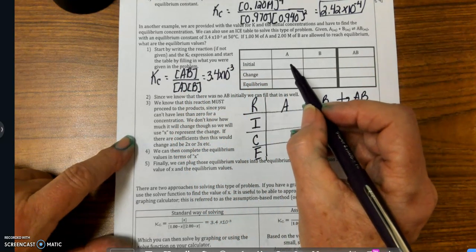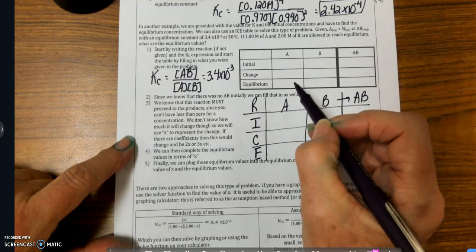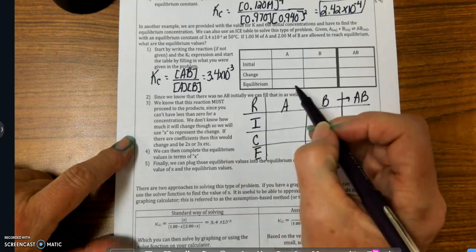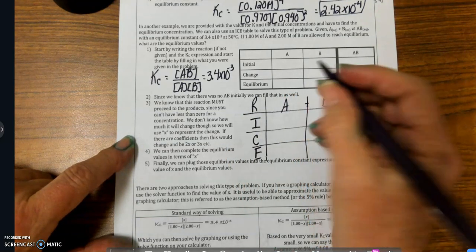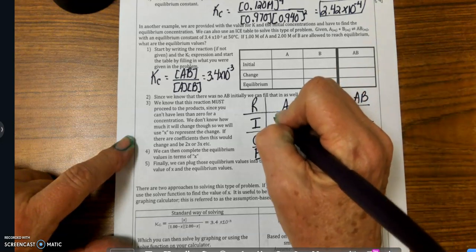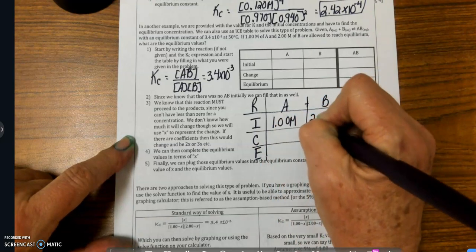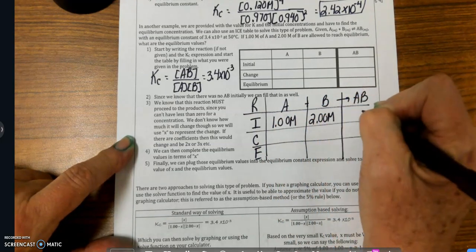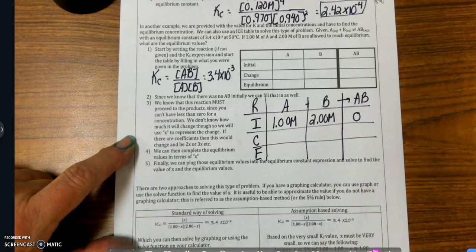I'm going to have A and B initially, and I'm going to have to find out what their concentrations are at the end of the reaction. So let's do that. I know that my concentration of A initially is 1 molar, B is 2 molar, and because AB was not mentioned, we're going to make the assumption that it was 0.